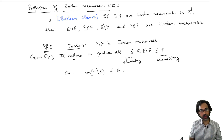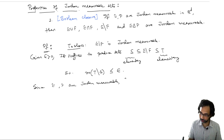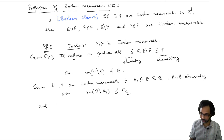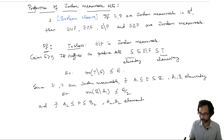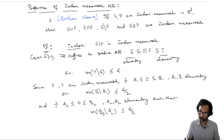Since E and F are Jordan measurable, there exist elementary sets A1 and B1 with A1 ⊆ E ⊆ B1 such that the measure of B1 minus A1 is less than or equal to epsilon over 2, and similarly for F there exist A2 and B2 elementary such that the measure of B2 minus A2 is less than or equal to epsilon over 2. We will use these sets B1, B2, A1, A2 to produce our T and S.